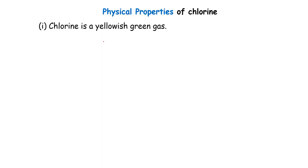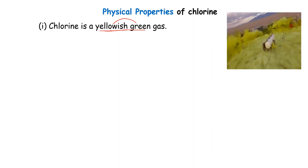The first one, color. Chlorine is a yellowish green gas. Now, whether you call it greenish yellow gas, it doesn't matter as long as it's showing that the color is between yellow and green. You know, color can be continuous.